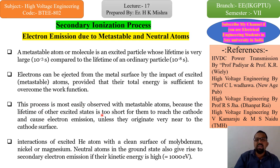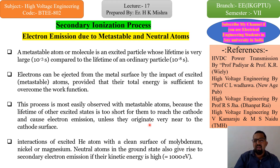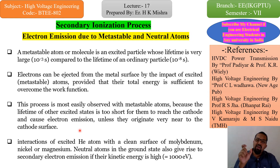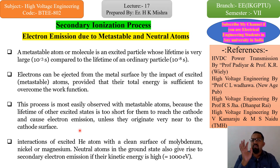This process is most easily observed with metastable atoms, because the lifetime of other excited states is too short for them to reach the cathode and cause electron emission, unless they originate very near the cathode surface. Sometimes electrons coming from the anode cannot travel the full distance to reach the cathode. So the metastable emission and neutral atom process is preferred near the cathode so that the electron emission process can be completed.